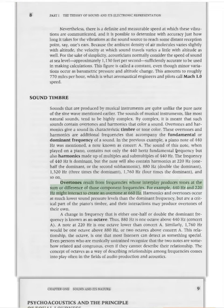Harmonics and overtones occur at much lower sound pressure levels than the dominant frequency but are a critical part of the piano's timbre. A change in frequency that is either one-half or double the dominant frequency is known as an octave. Thus, 880 Hz is one octave above 440 Hz, and 220 Hz is one octave lower than Concert A. This relationship, the octave, is one that most listeners can detect as something special. Even musically untrained persons recognize that the two notes are somehow related and congruous. The concept of octaves as a way of describing relationships among frequencies comes into play often in audio production and acoustics.